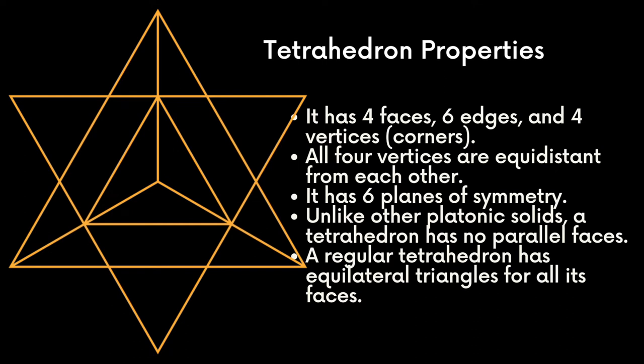A tetrahedron is actually half of this image, but in cubic form. We see here more of a flat image of a star tetrahedron. If you break this in half and look at just the upward pointing triangle and envision that as a cubic form, that in essence is the tetrahedron. It has four faces, six edges, and four vertices. All four vertices are equidistant from one another, creating six planes of symmetry. Unlike other platonic solids, a tetrahedron has no parallel faces. All of its faces are equilateral triangles.